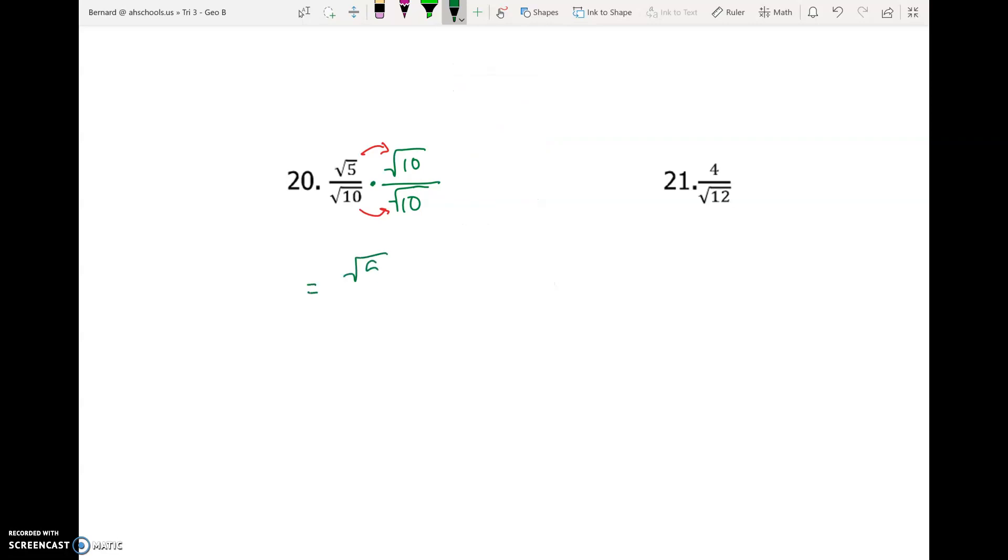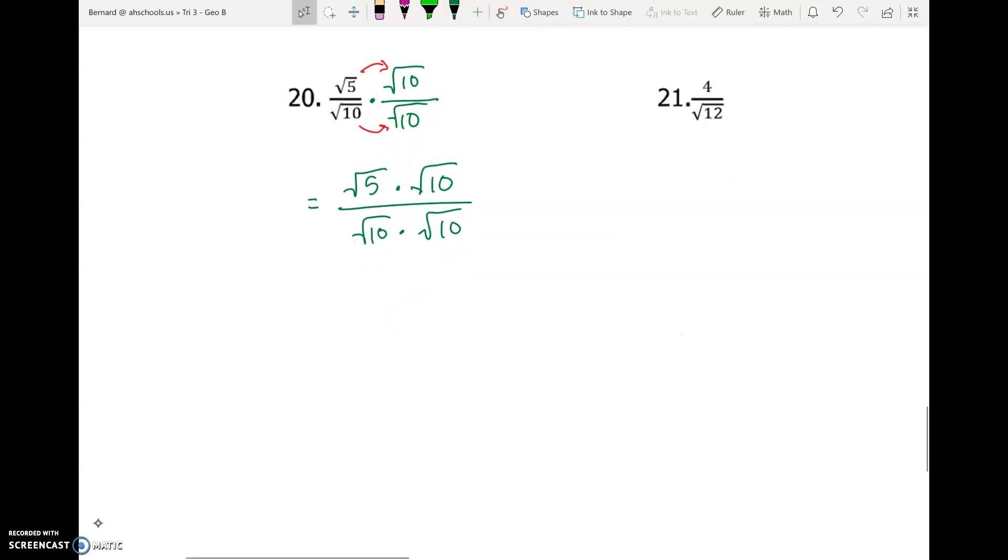On top, we get square root of 5 times square root of 10. And on the bottom, we get square root of 10 times square root of 10. And I'm going to take this step by step. So this might even be a little bit slower than before.